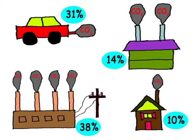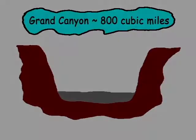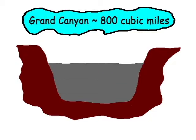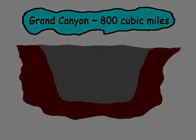Residential and commercial locations, industry, transportation and power plants are major carbon dioxide emission sources. Annually generated carbon dioxide in the U.S. is enough to fill the Grand Canyon.